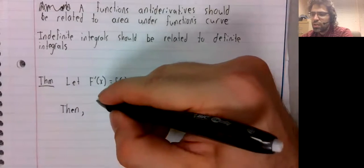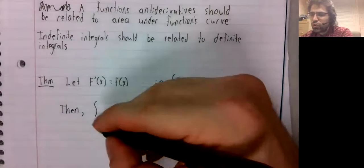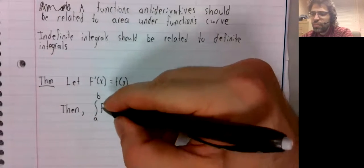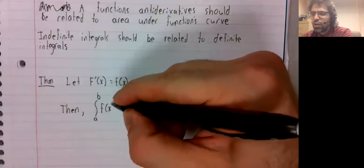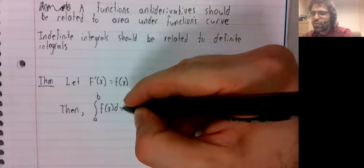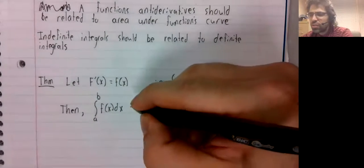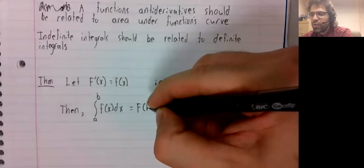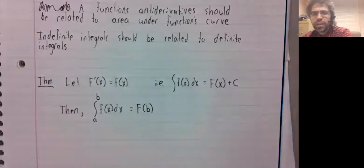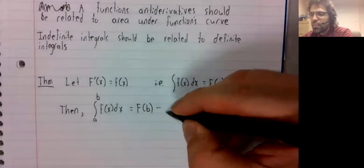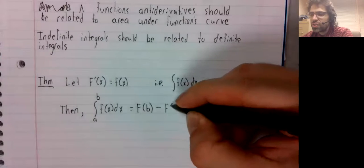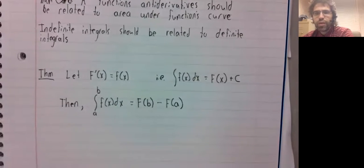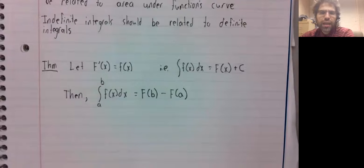Then, the definite integral from a to b of lowercase f of x is the antiderivative evaluated at b minus the antiderivative evaluated at a.